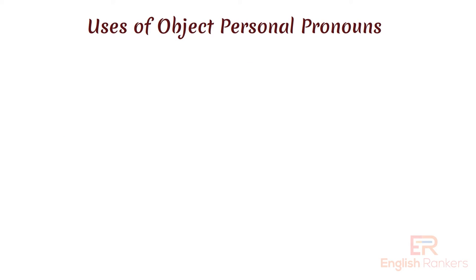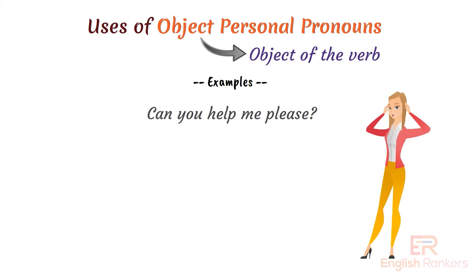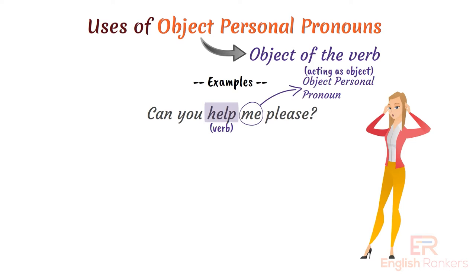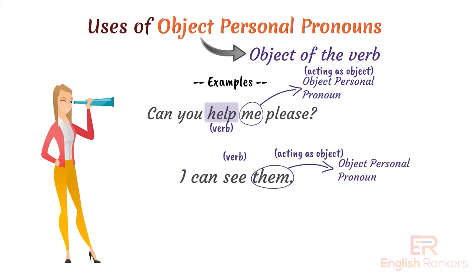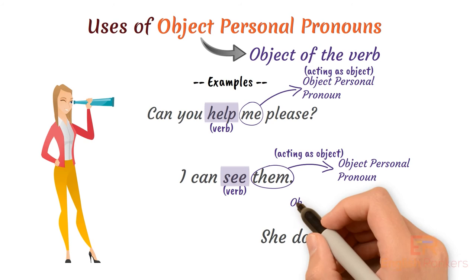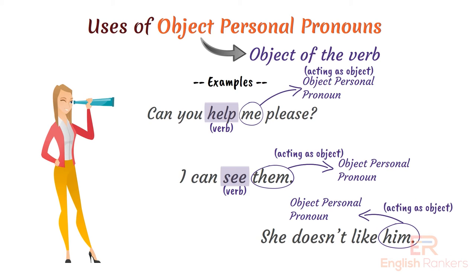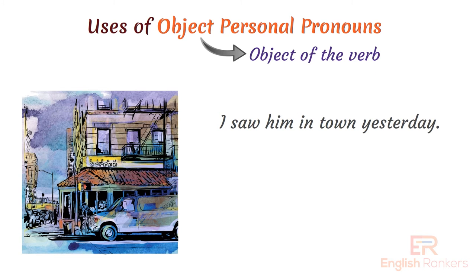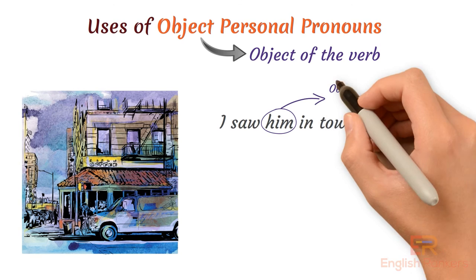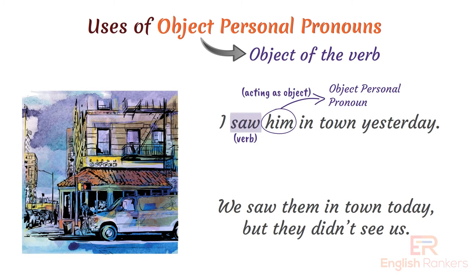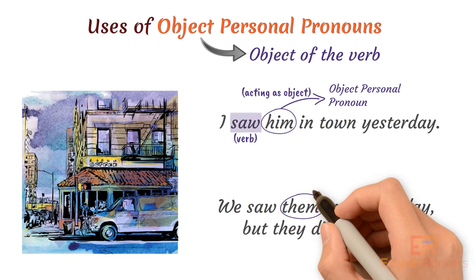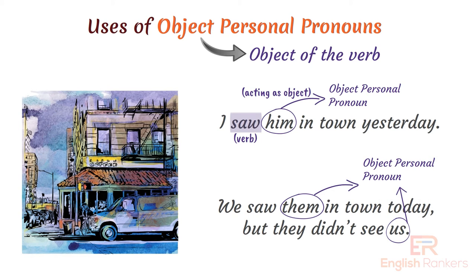We use object personal pronouns as the object of the verb. For example: 'Can you help me please?' — 'me' is an object personal pronoun acting as the object of 'help'. 'I like him' — 'him' is an object personal pronoun acting as the object of 'like'. 'She doesn't like him' — 'him' is the object of 'like'. 'I saw him in town yesterday' — 'him' is the object of 'saw'. 'We saw them in town today but they did not see us' — 'them' and 'us' are object personal pronouns acting as objects of 'saw' and 'see' respectively.